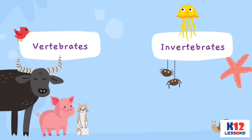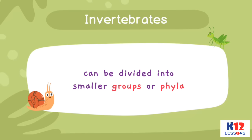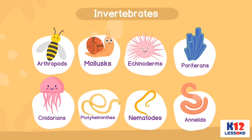You have learned that animals can be divided into two groups: vertebrates and invertebrates. Both of these can be divided into smaller groups. Invertebrates can be divided into smaller groups or phyla. In this lesson you will be able to identify the different types of invertebrates and their distinguishing characteristics.